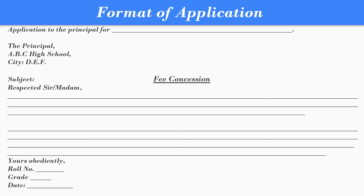The next step is to write the subject. The subject is, for example, fee concession. And then write down 'Respected Madam' or 'Respected Sir.' Then the main body can be written in two or three paragraphs. At the end, write 'Yours obediently' or 'Yours faithfully,' and then roll number and then class.